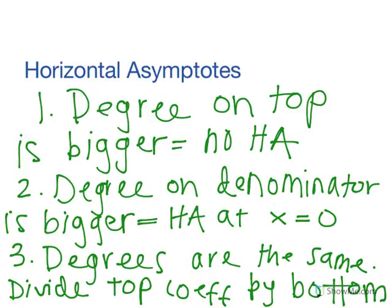For horizontal asymptotes there's three main rules. If the degree on top is bigger, there's no horizontal asymptote. If the degree on the denominator, on the bottom, is bigger, there's a horizontal asymptote at x equals zero. And if the degrees are the same in the numerator and the denominator, then you divide the top coefficient by the bottom. We will show you these in the examples.